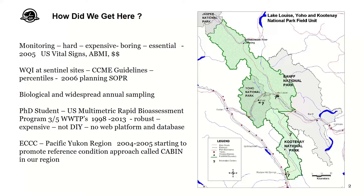It was really satisfying to reflect on all the things that happened that got Parks Canada to this point. The story starts back in 2005. Every land manager knows they need to do some sort of monitoring for whatever their objective is, and we also know it's really hard, really expensive, and really boring, but it is essential. In 2005, the US National Park Service was working on their vital signs program, and the province of Alberta was working on the Alberta Biodiversity Monitoring Institute, ABMI.